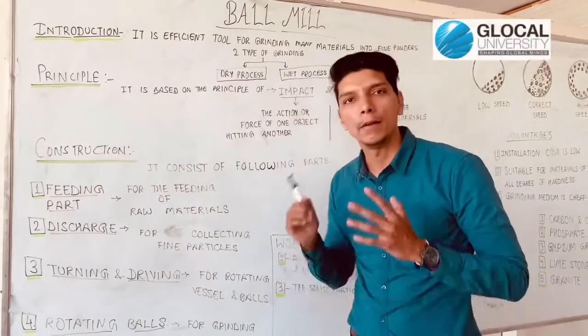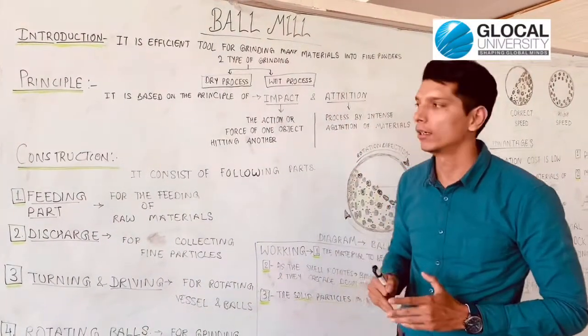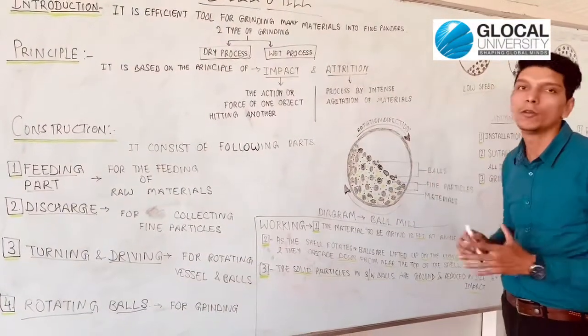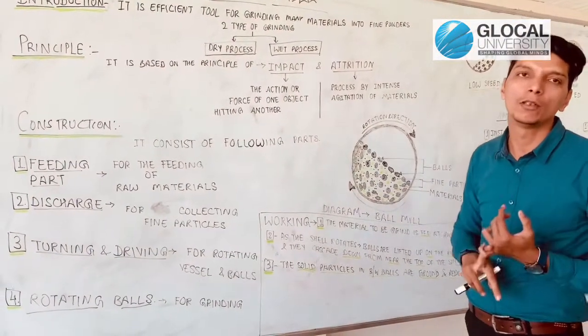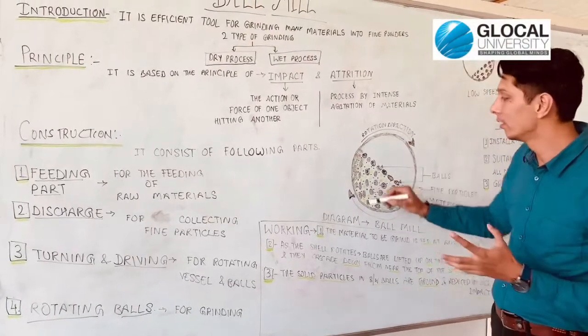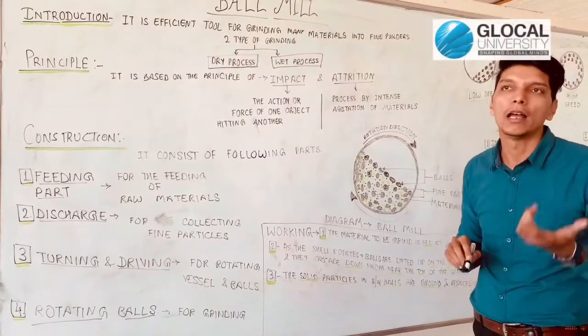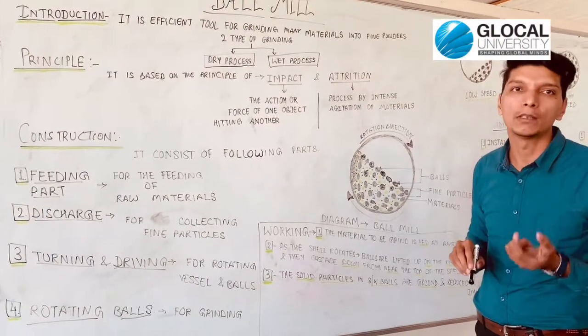The ball mill works on impact and attrition. Now, its construction. Basically, it is a hollow vessel made of steel or iron. The main role is played by the ball, which is heavy, about 200 to 300 grams.